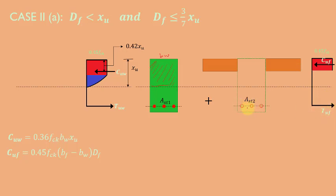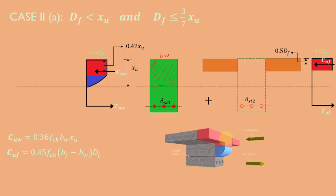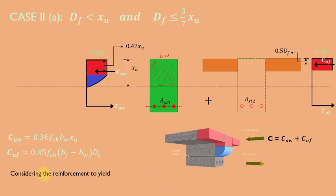There is also a tension force TuW acting on the reinforcement. A 3D view of the stress block of this case is shown here — the complete stress block acts on the web portion while the overhanging flange is subjected to the rectangular part of the stress block with constant stress of 0.45 fck. The total compression force is the sum of compression from the web and from the flange. Assuming tension reinforcement to yield, the resultant tensile force on reinforcement is T = 0.87 fy times area of tension steel.